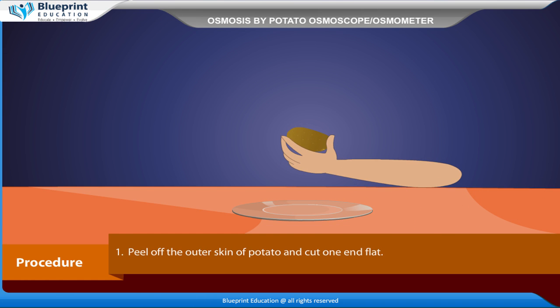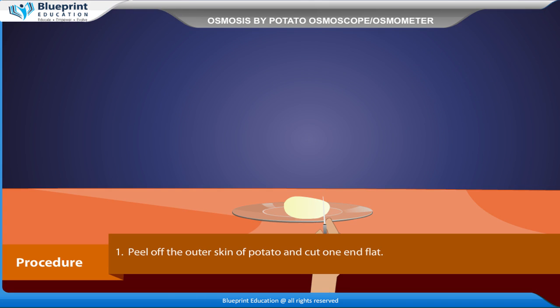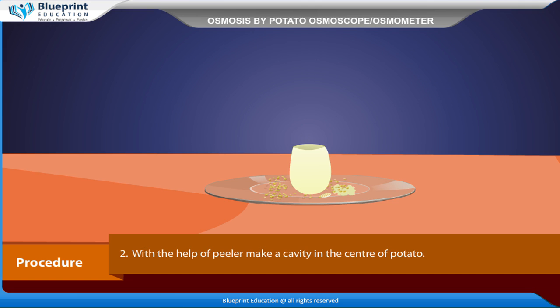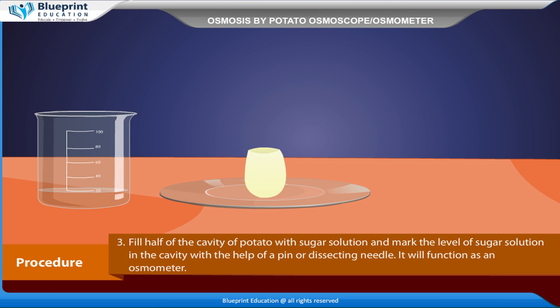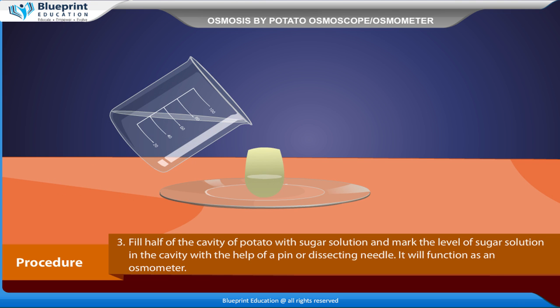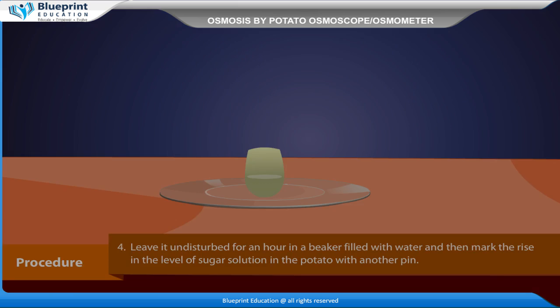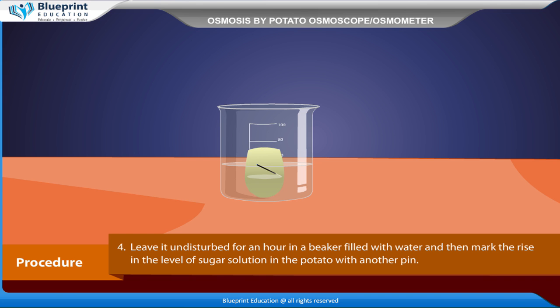Procedure: Peel off the outer skin of potato and cut one end flat. With the help of a peeler, make a cavity in the center of the potato. Fill half of the cavity with sugar solution and mark the level of sugar solution in the cavity with the help of a pin or dissecting needle. It will function as an osmometer. Leave it undisturbed for an hour in a beaker filled with water, then mark the rise in the level of sugar solution in the potato with another pin.